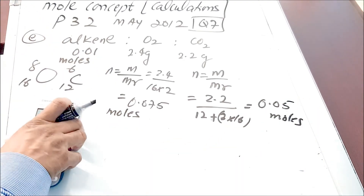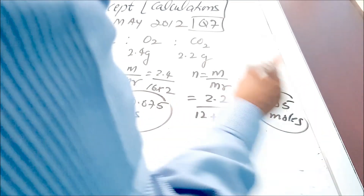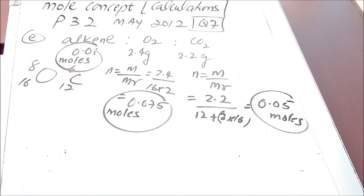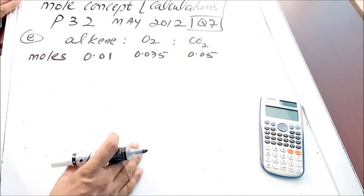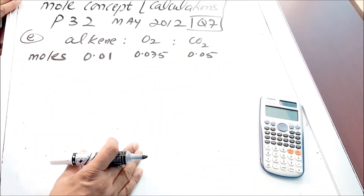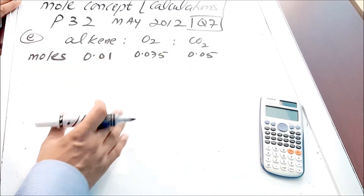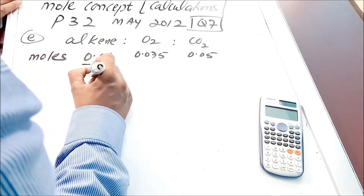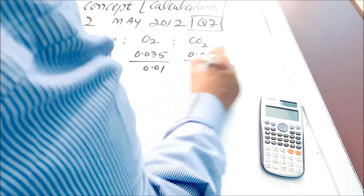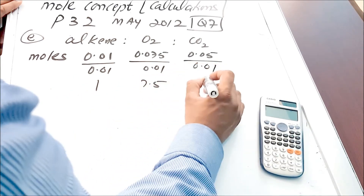So now we have all the moles: alkene = 0.01 mol, oxygen = 0.075 mol, and carbon dioxide = 0.05 mol. Our next objective is to convert this into a simple ratio. We divide all three by the smallest number, which is 0.01. This gives us the ratio 1 : 7.5 : 5.